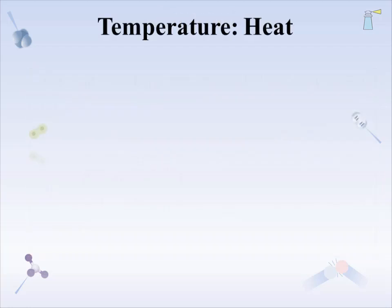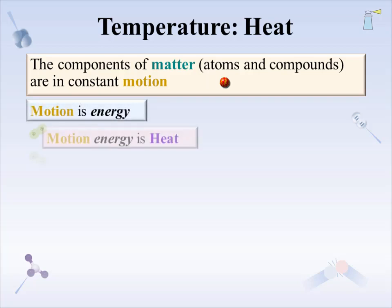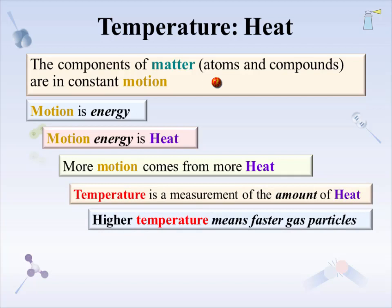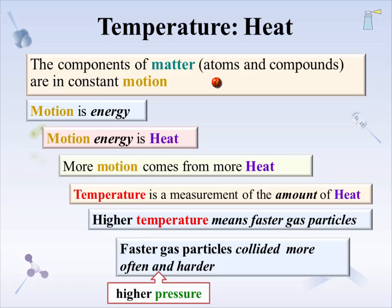The next property is temperature, T. From the temperature lecture, matter components — atom or compound — are in constant motion, which is true for solids, liquids, or gases. Motion is energy, and motion energy is a form of heat. More motion comes from more heat. Temperature is a measurement of that amount of heat. Higher temperatures mean more heat and faster gas particles. From a collision perspective, the faster a particle moves, the more often it collides and the harder it collides, giving rise to higher pressure. Conversely, cooling a gas slows the particles, reducing temperature and pressure, all things being equal.